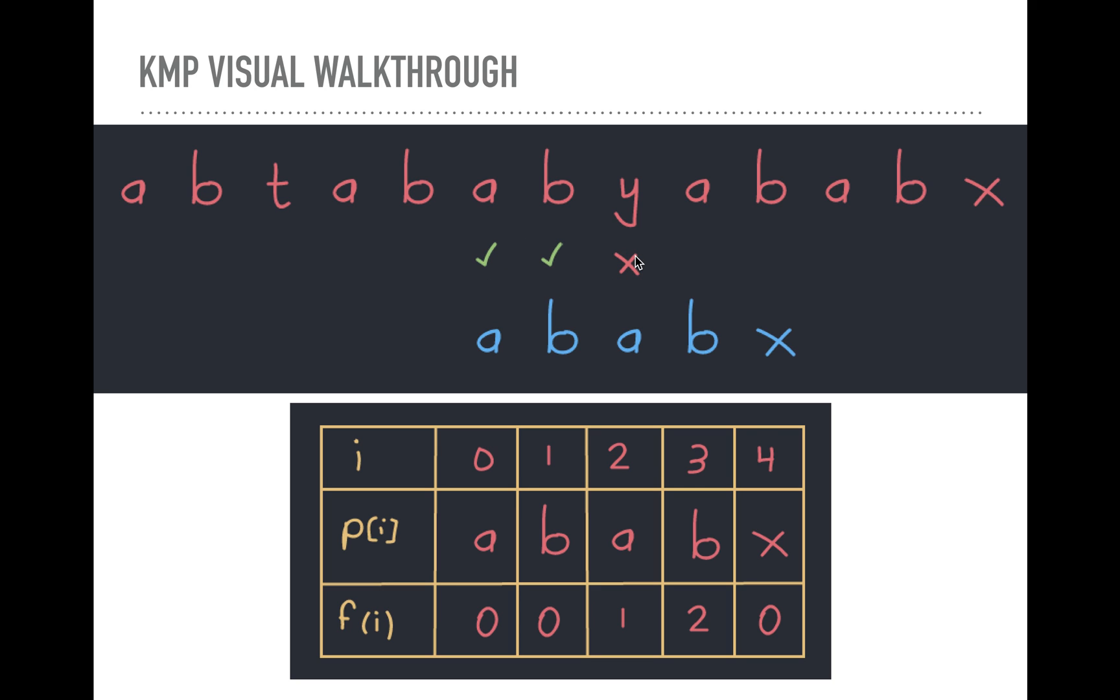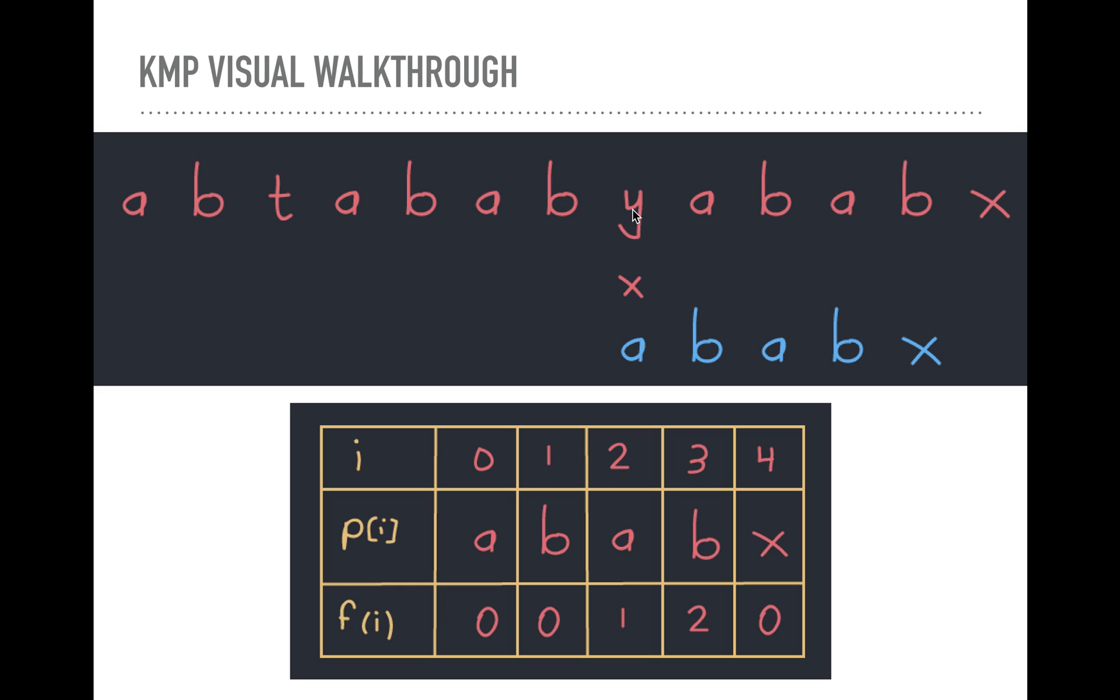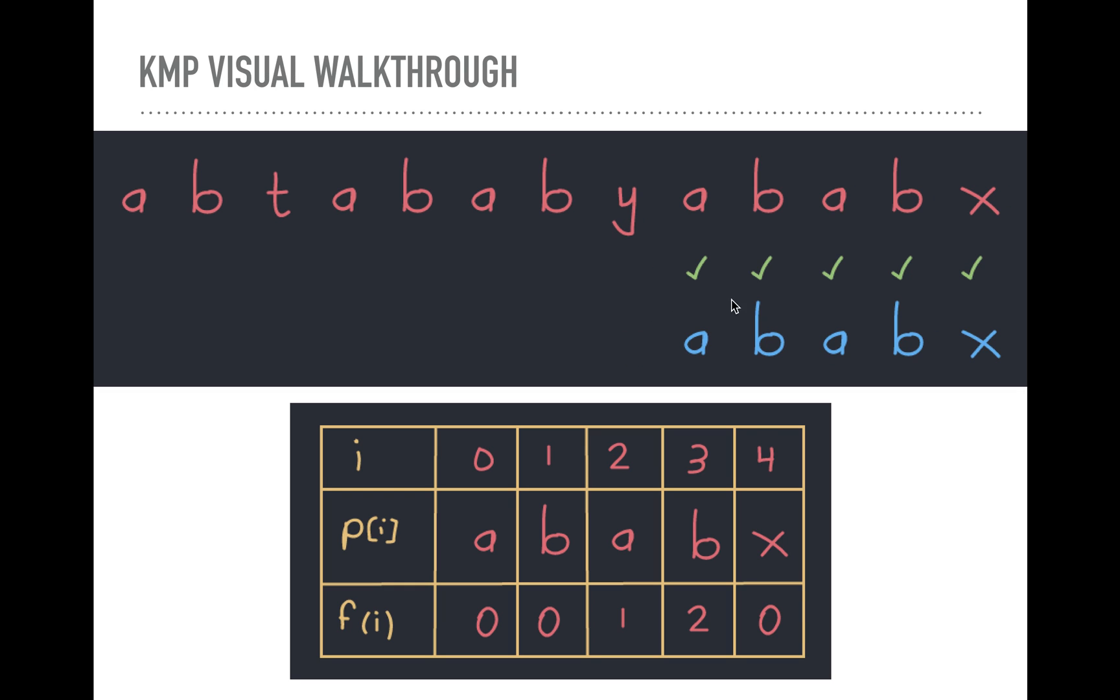So we look here, the failure function computed is zero. So we're going to align zero with this. First thing is a mismatch. So we'll just move it forward by one and then match, match, match, match, match.